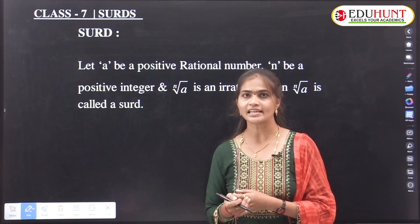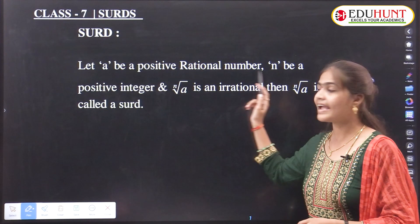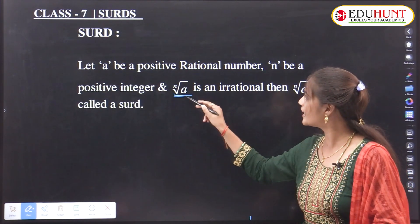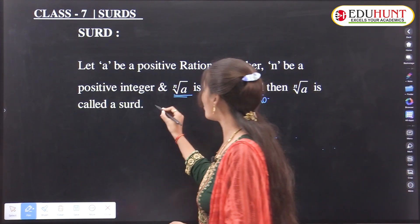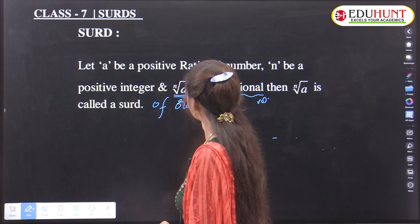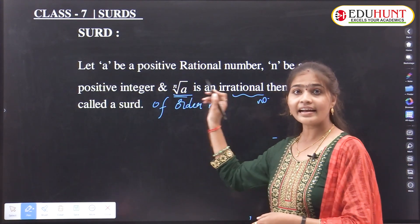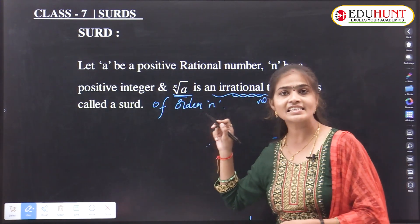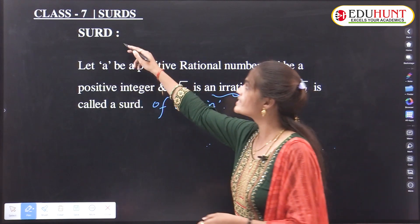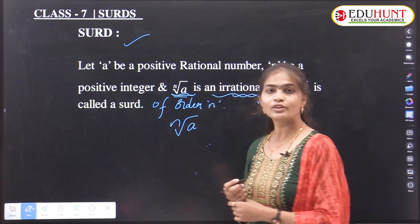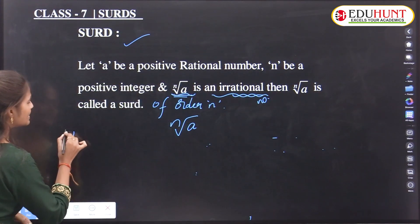Now let's come to the concept of surds. Let a be any positive rational number and n be a positive integer. If the nth root of a is an irrational number, then the nth root of a is called a surd of order n. Numbers in the form of nth root of a — where nth root of a must be irrational — are known as surds. A surd is also known as a radical.